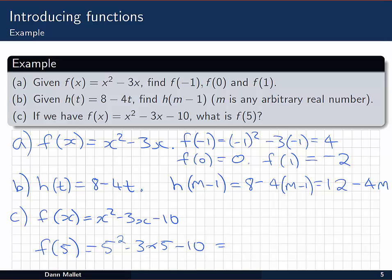So that's 25 minus 15 minus 10—well that's just 0. So f of 5 is 0 when f of x is x squared minus 3x minus 10.